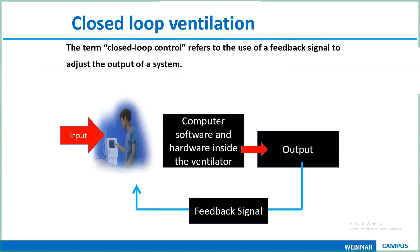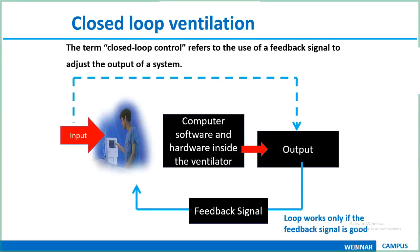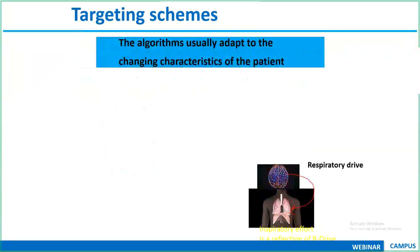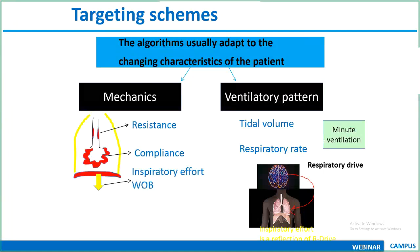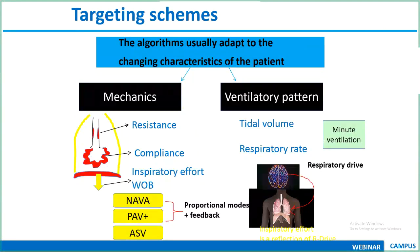In closed-loop ventilation, the machine can target a set oxygenation level and automatically adjust FiO2, adjust minute ventilation targeting a PaCO2 via EtCO2, or optimize pH. Algorithms used include NAVA, PAV, and ASV. These algorithms look at mechanics (resistance, compliance, inspiratory effort, work of breathing) and the patient's diaphragmatic signal to adjust ventilatory parameters accordingly.